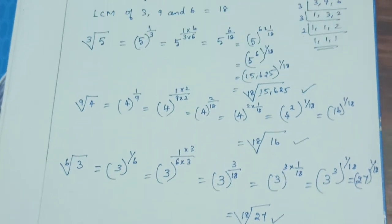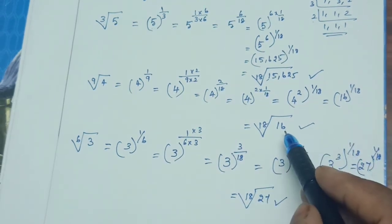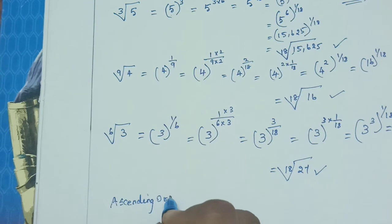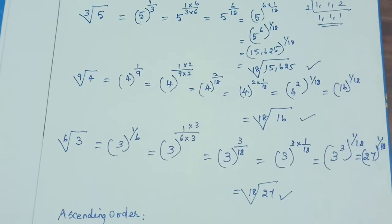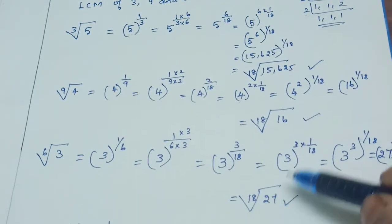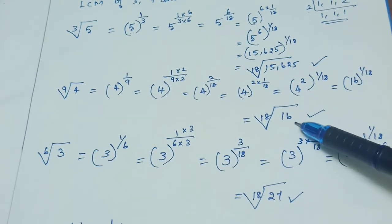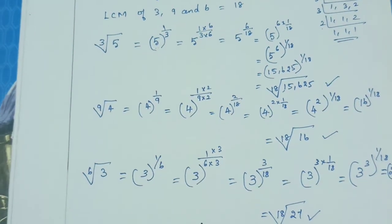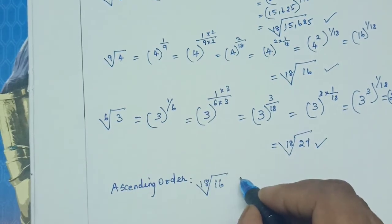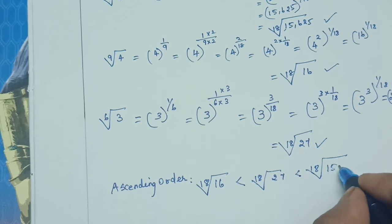Now compare the surds. All three are now 18th roots, so we only need to compare the radicands — the values inside the radical symbol. The radicands are 15,625, 16, and 27. The smallest is 16, next is 27, and the largest is 15,625. So in ascending order: 18th root of 16 is less than 18th root of 27 is less than 18th root of 15,625.